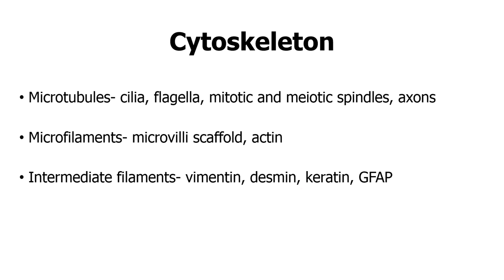The cytoskeleton is made up of three main systems: the microtubule system, the microfilament system, and the intermediate filament system.